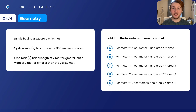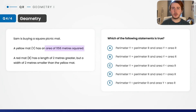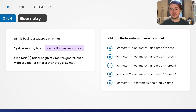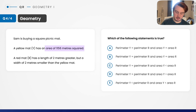One last question — a tricky one, so focus on how you'd approach it. We have a yellow matte and a red matte. Rather than splitting it into separate numerical calculations, I'm going to use algebra. Let's call the yellow matte's side 'x', so its area is x squared. The red matte has slightly different dimensions but still in terms of x.